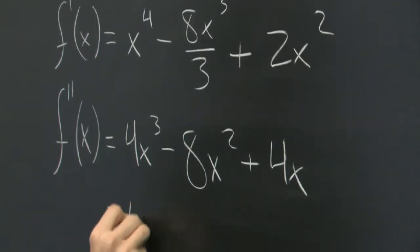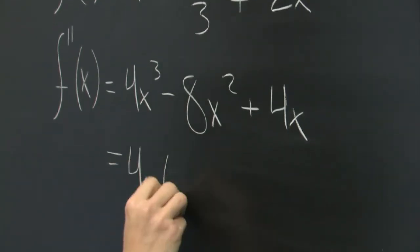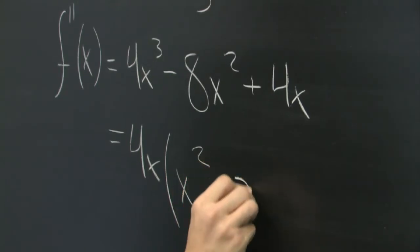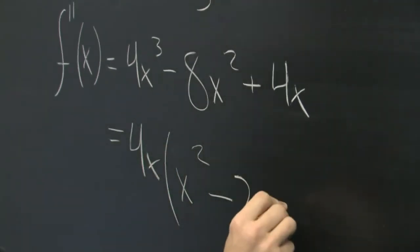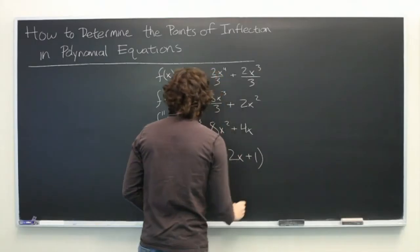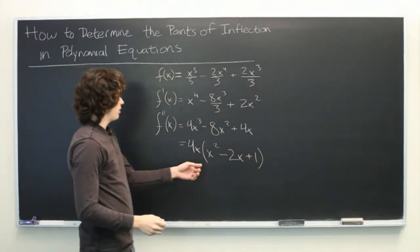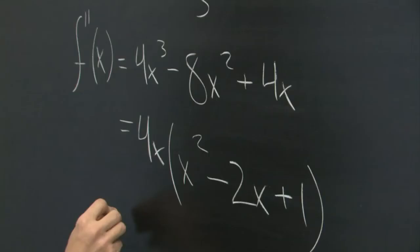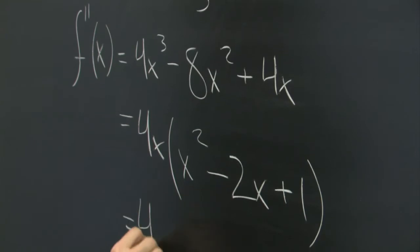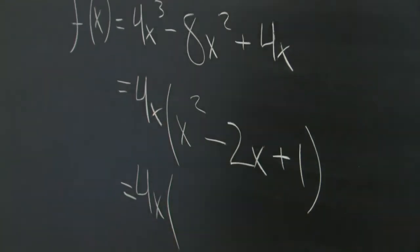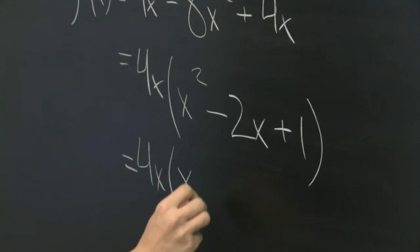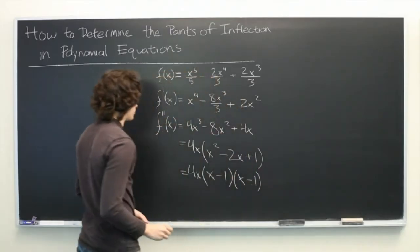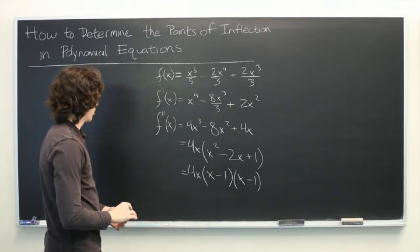It's equal to 4x times (x^2 - 2x + 1). Okay, and it just so happens that this polynomial can be factored as well. It's 4x times (x - 1) times (x - 1) or (x - 1)^2, however you prefer to write it.